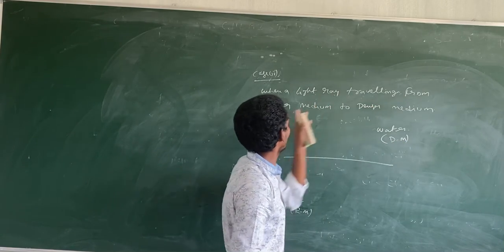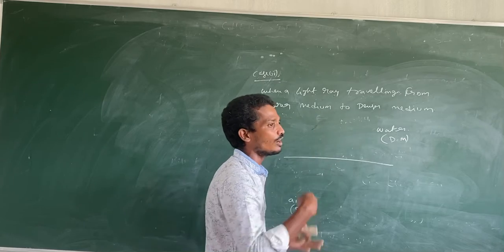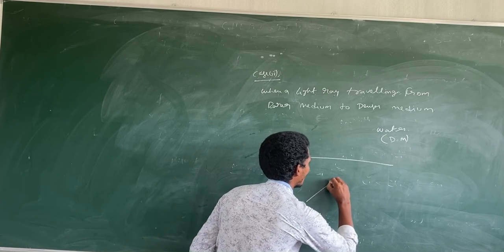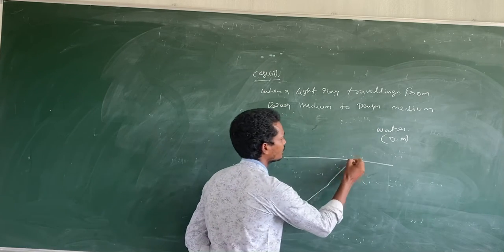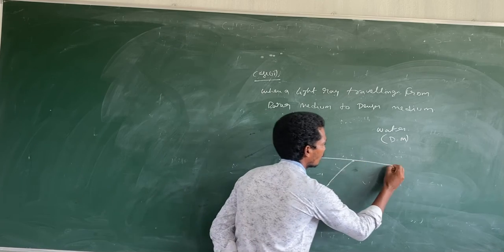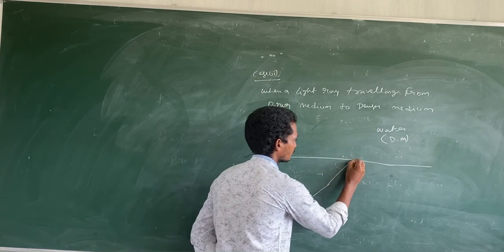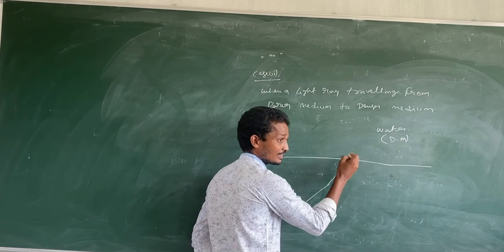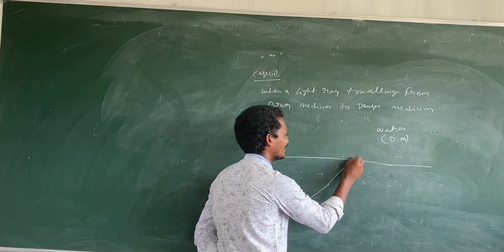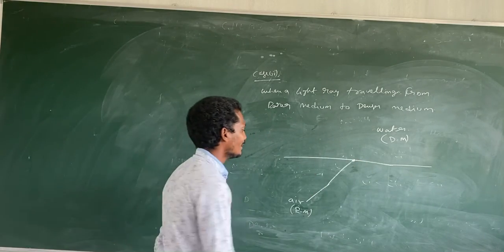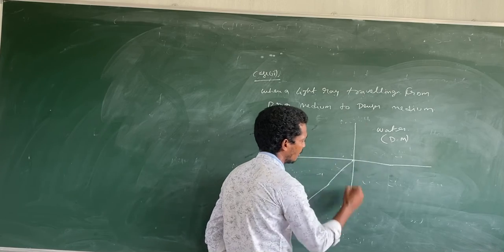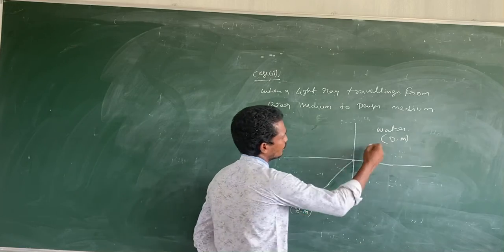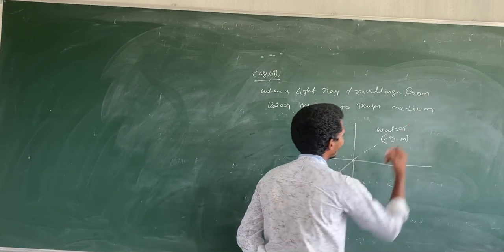When light is traveling from the rarer medium to the denser medium, here what has happened? This is the rarer medium. Wherever the light ray is incident on the surface, that is called the point of incidence. According to the laws of reflection, the normal can be formed. Whenever light travels in the same medium, the ray travels in a straight direction. But whenever the light ray travels from one medium to another medium, the direction changes.